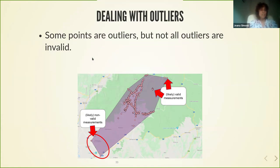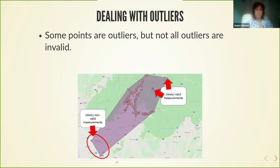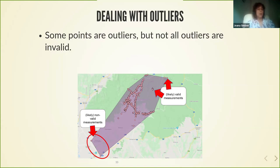In the example shown here, at the bottom you see some points that are most likely non-valid, but at the top there are points in odd locations — far away from the dominant cluster — because they are sitting on the slope of a mountain, which introduces some distortion in the signal. So we want to consider these points. How can we distinguish the valid outliers from the invalid ones?